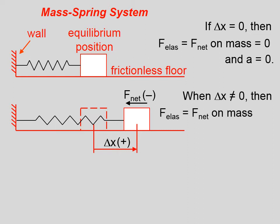When delta x is not equal to zero, then the net force on the mass is also not equal to zero. And the acceleration is also not equal to zero.